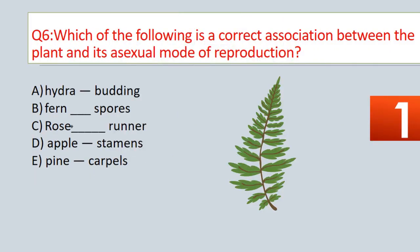Question No. 6. Which of the following is a correct association between the plant and its asexual mode of reproduction? Options are: A. Hydra — budding. B. Fern — spores. C. Grass — runner. D. Apple — stamens. E. Pine — carpels.